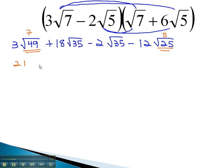We now have 21, with no square root left, plus 18, root 35, which can't simplify, minus 2, root 35, minus 60, with no root left.